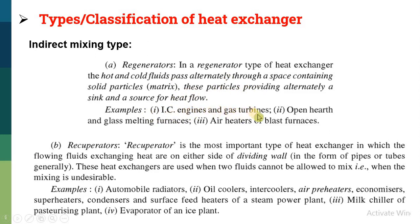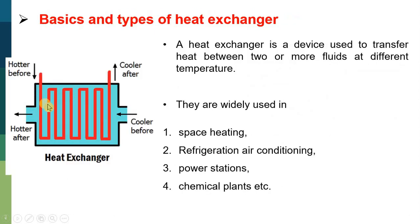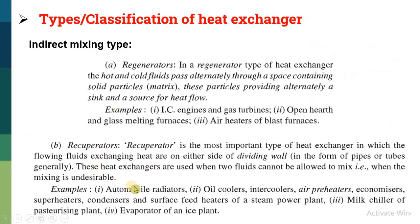Examples of regenerators are IC engines, gas turbines, or air heaters in a blast furnace. Another type is known as a recuperator. A recuperator is the most important type of heat exchanger, in which the fluid flowing through it is divided by a wall in the form of a pipe or tube. The hot fluid passes through the tube and the cold fluid passes over the tube, so both fluids are separated by the tube wall. Examples include automobile radiators, oil coolers, milk chillers, and evaporators in ice plants. All these are examples of the recuperator.